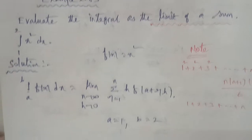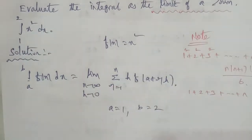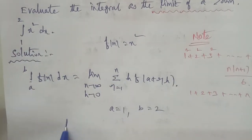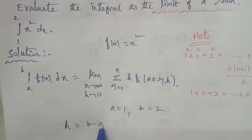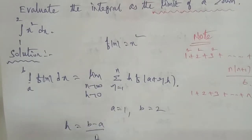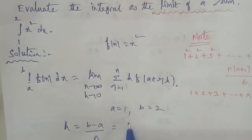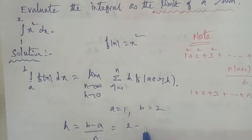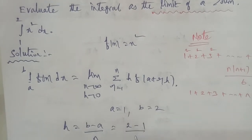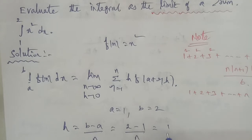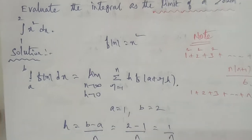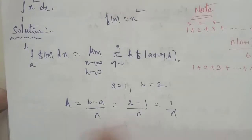Next, in the formula, h is equal to b minus a by n. So, substituting b equals 2 and a equals 1 gives 2 minus 1 by n, which is 1 by n. This is the h value.